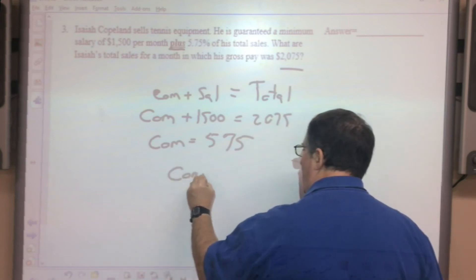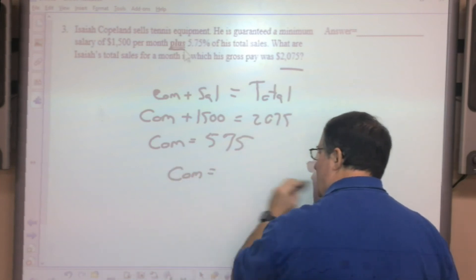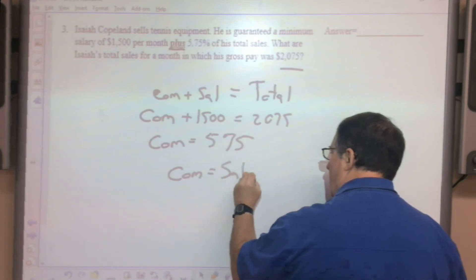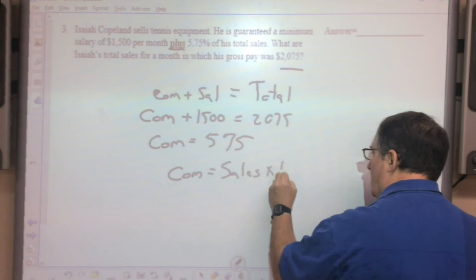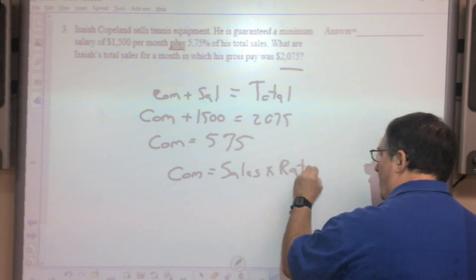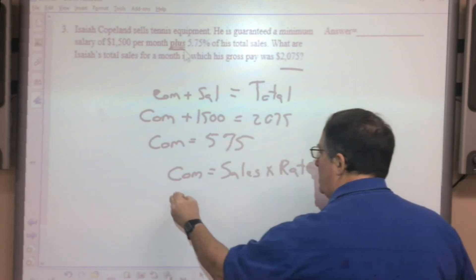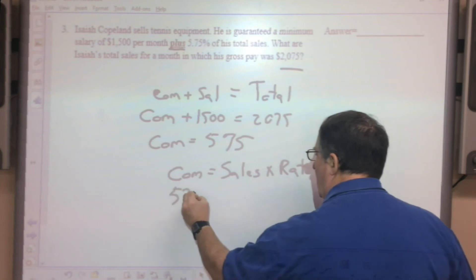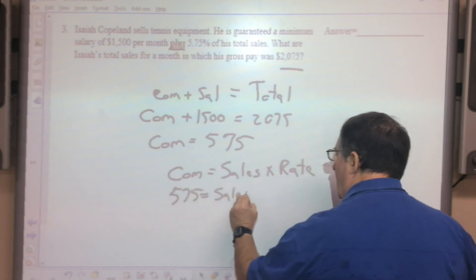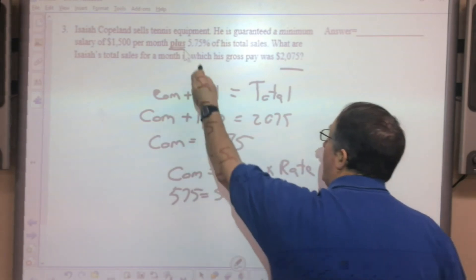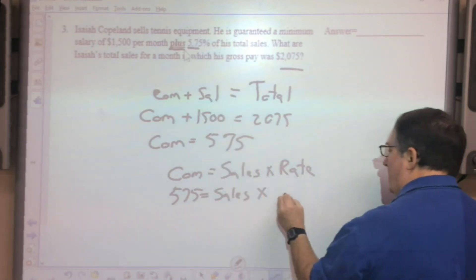The commission alone is 575. The formula for commission is total sales times commission rate, and the commission we know is 575 from the previous one, and we're looking for sales, and that's times a rate.